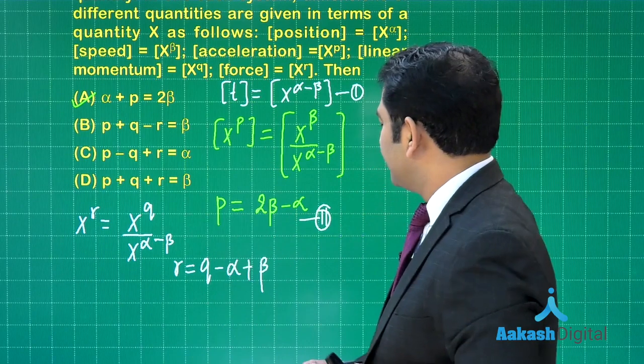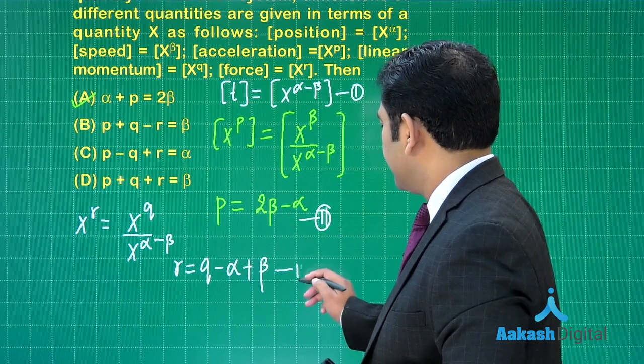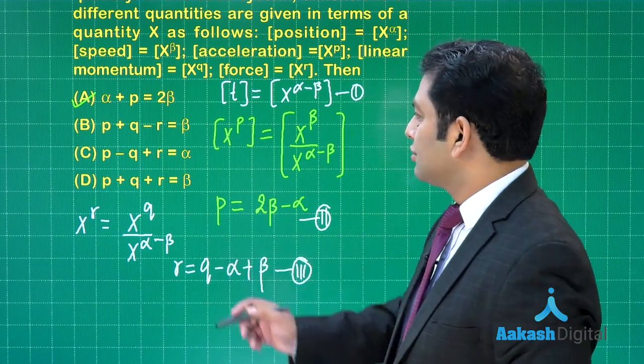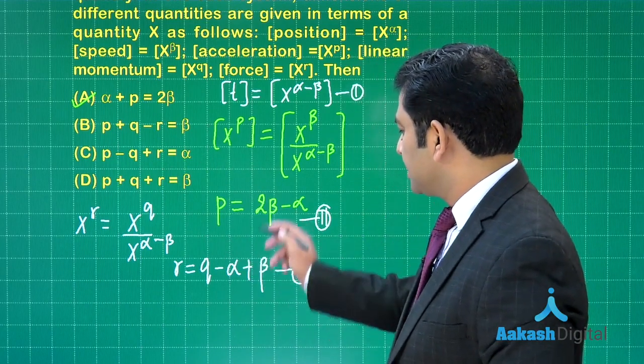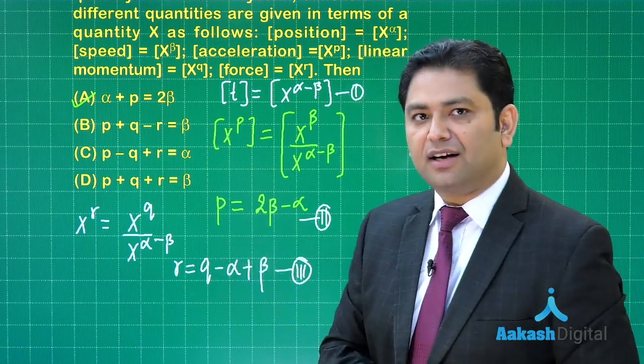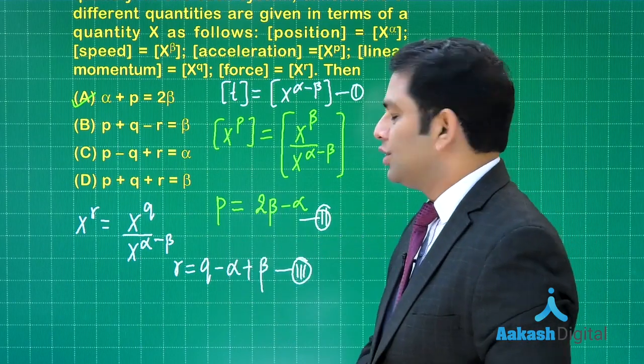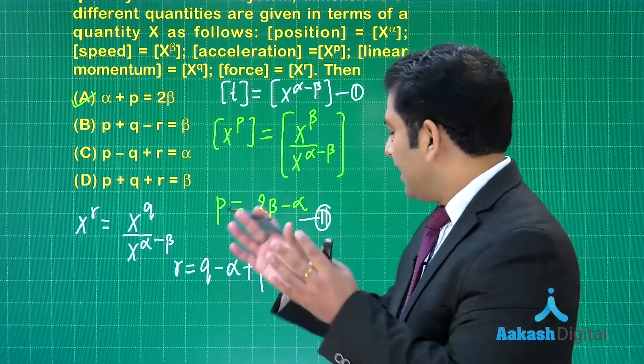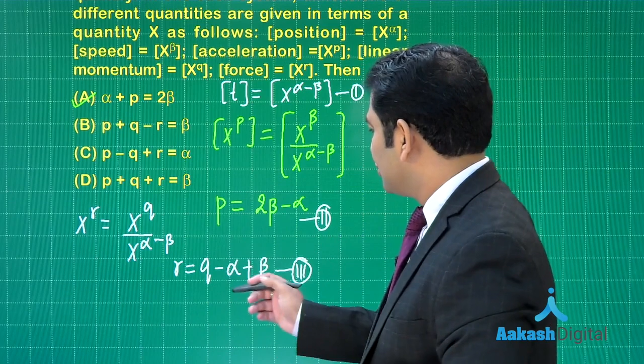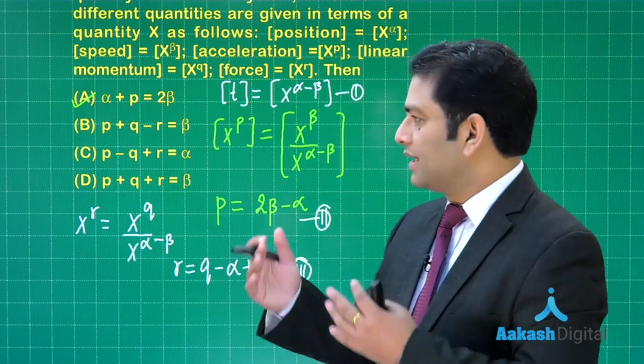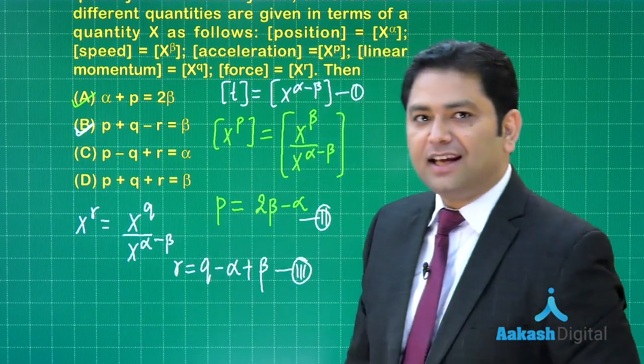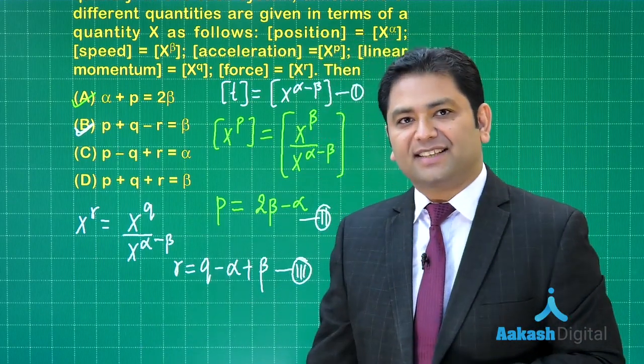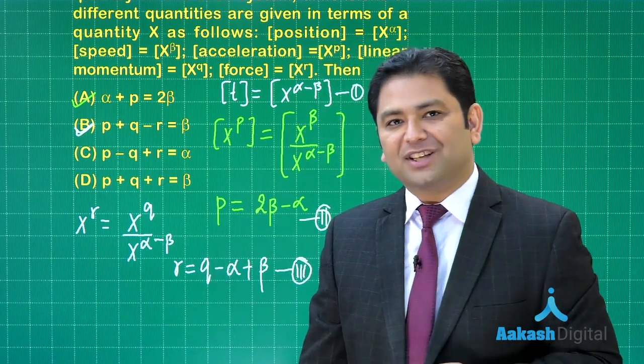You do all those calculations. Now it is quite simple. If you want to relate p, q, r and β, from these two equations you need to eliminate α. If you want to relate p, q, r and α, you need to eliminate β. This is quite straightforward. You do that, you will get option number A and option number B to be correct. Let us go to the next question.